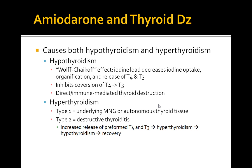Amiodarone-induced hypothyroidism occurs in about 10% of patients and is more common in iodine replete areas. The Wolff-Chaikoff effect involves an iodine load which decreases iodine uptake, leading to reduced organification and decreased release of T4 and T3. Amiodarone also inhibits conversion of T4 to T3 and causes direct immune-mediated thyroid destruction. These three mechanisms together cause hypothyroidism.